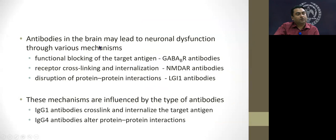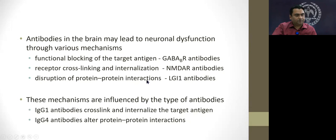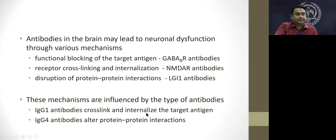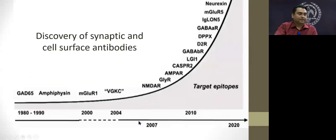Depending on which antibody or illness is involved, there are various mechanisms for neuronal dysfunction. In GABA-B receptor antibodies there is blocking of the antigen; in NMDA receptor there is crosslinking and internalization; and in LGI1 illness there is disruption of protein-protein interactions. These mechanisms are also influenced by the IgG subtype — IgG1 is more of crosslinking and internalizing the antigen, whereas IgG4 (found in LGI1) is more of altering protein-protein interactions.